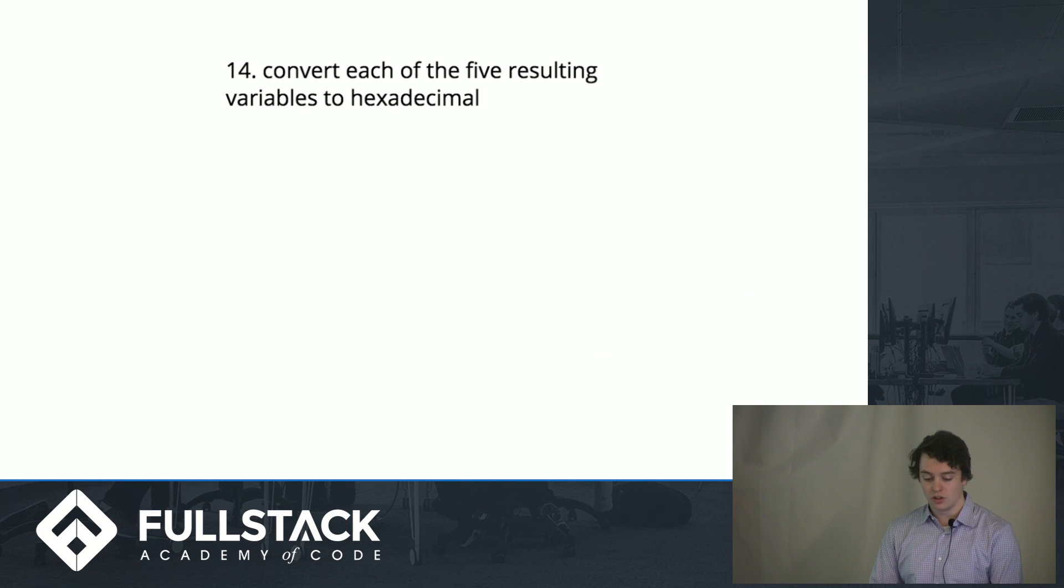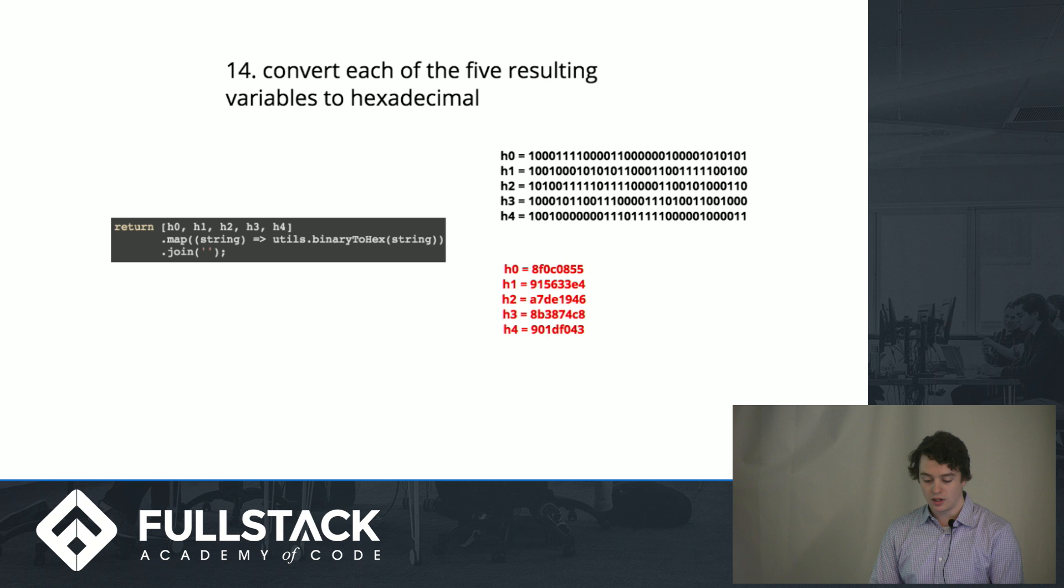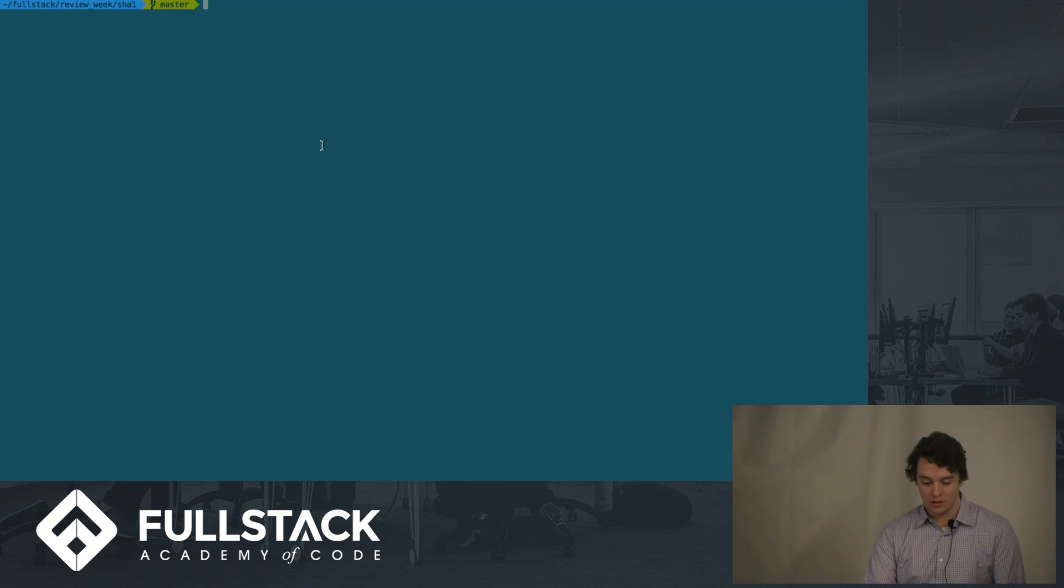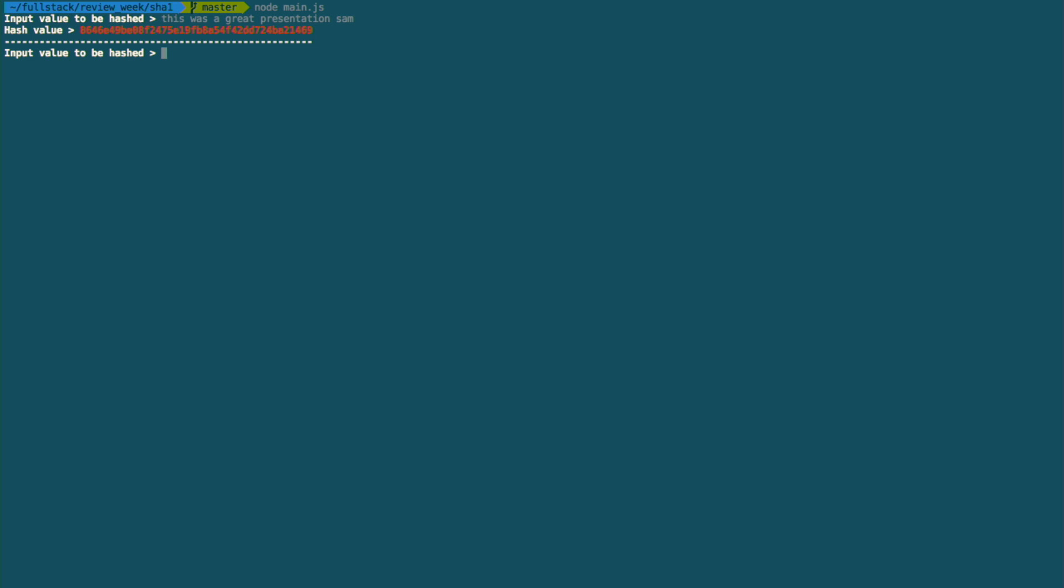Then you can convert each of those variables to hexadecimal. Easy. Join them together and return it. You have your hash value. So we can do really quickly—we can hash 'this was a great presentation, Sam.' Boom. That's our hash value. This is a JavaScript function.